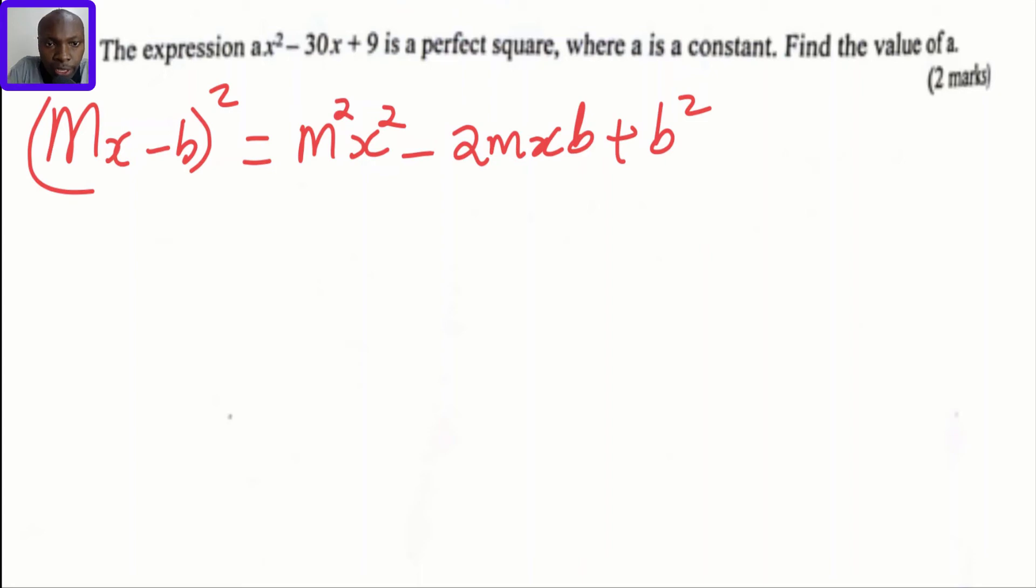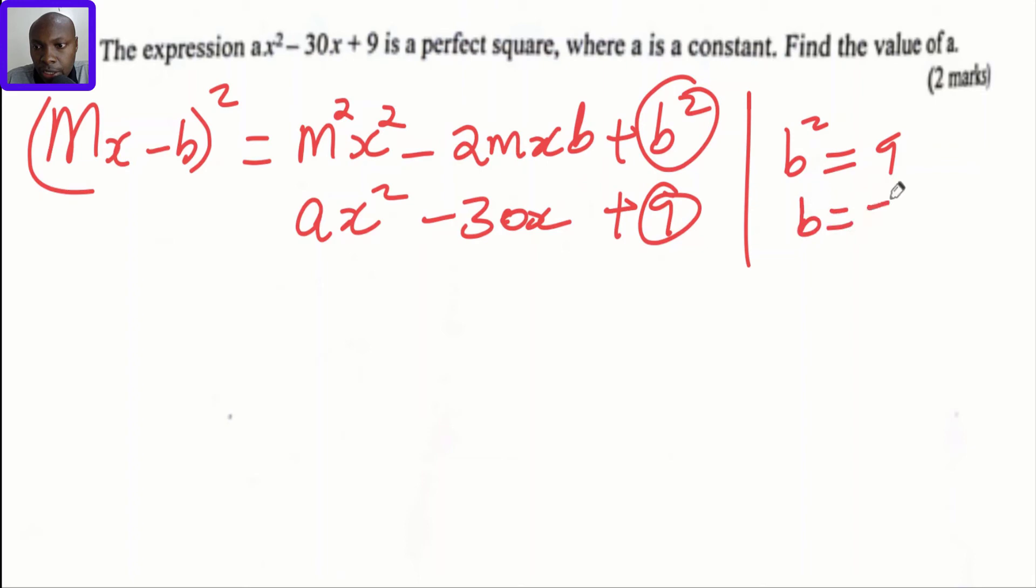I'm going to compare all three terms with what I have here: ax² - 30x + 9. You can see m²x² corresponds to ax², then the middle term, then the last term. If I take b² = 9, I will get b as positive or negative 3 by getting the square root.